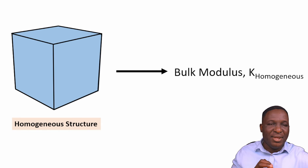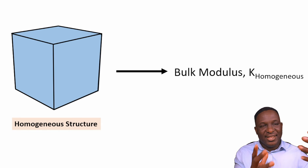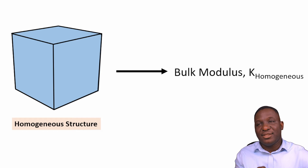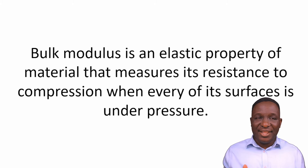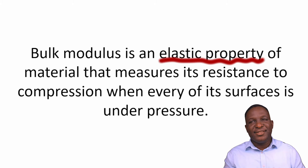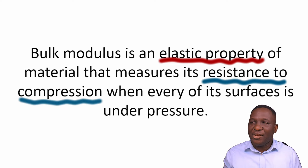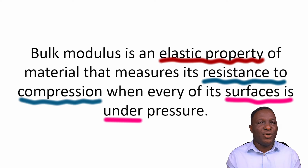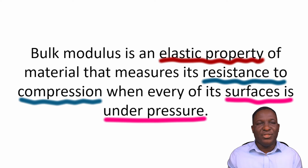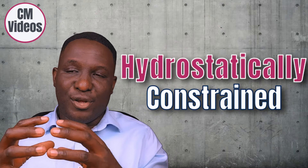So let's look at what the definition of a bulk modulus is. It's essentially an elastic property of a material that measures the resistance of that material to compressive loading — most of the time compressive, where every surface of the structure is constrained under pressure. When you think of a hydrostatically constrained model, how is that system going to respond under the applied pressure? The material property that characterizes this kind of response is called the bulk modulus.